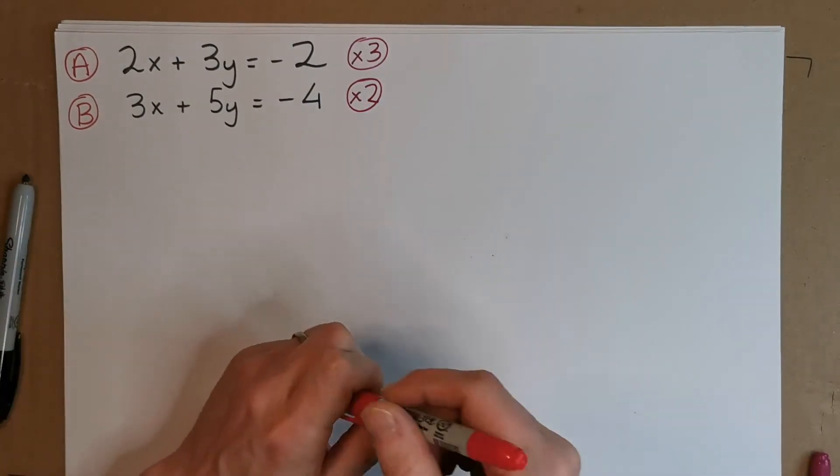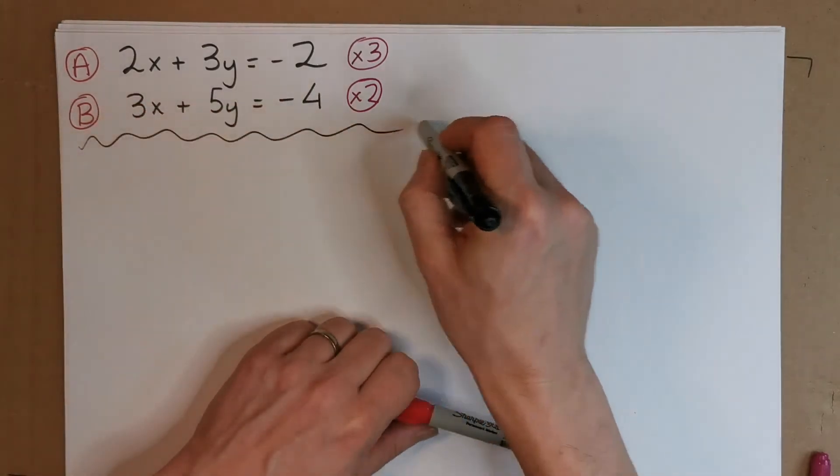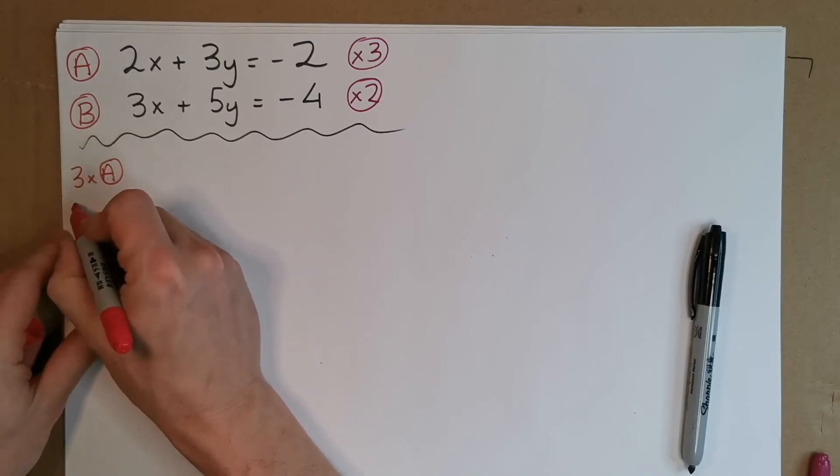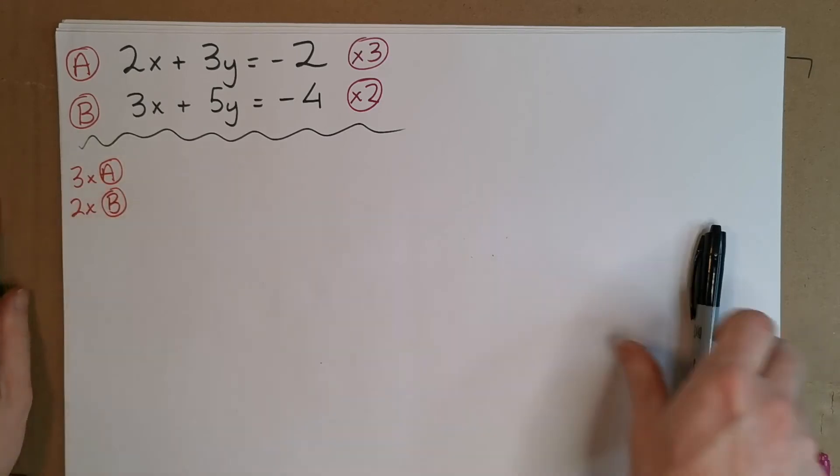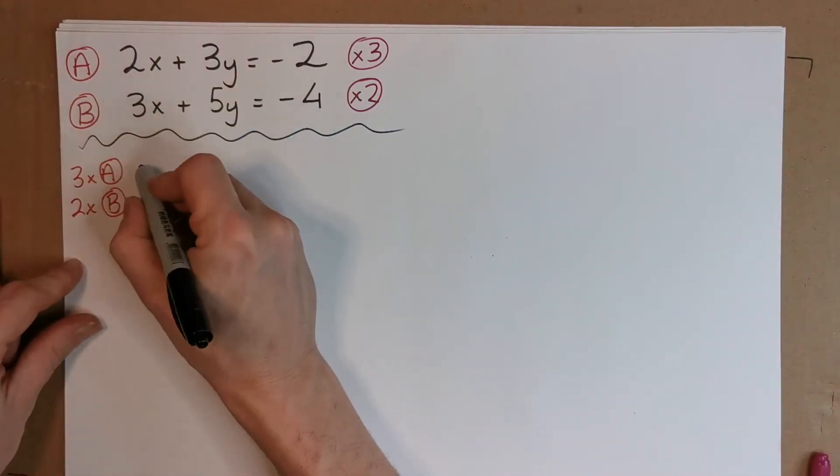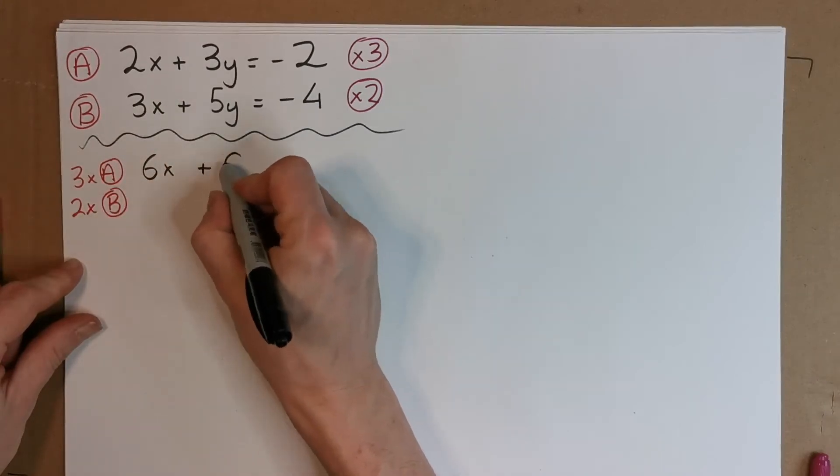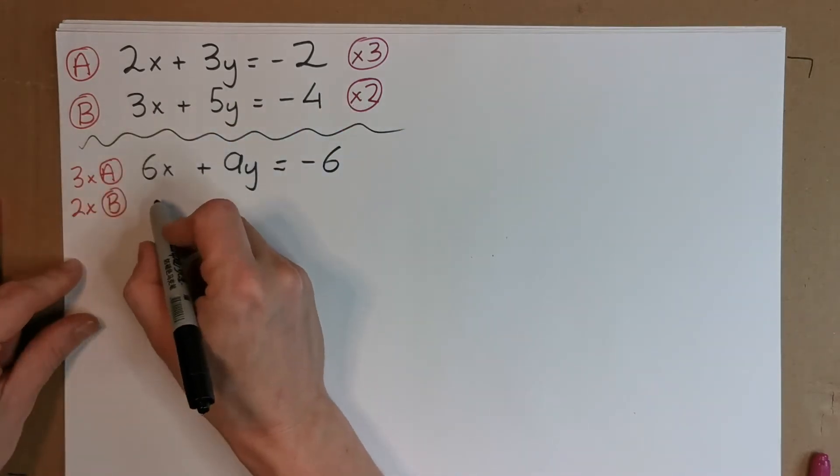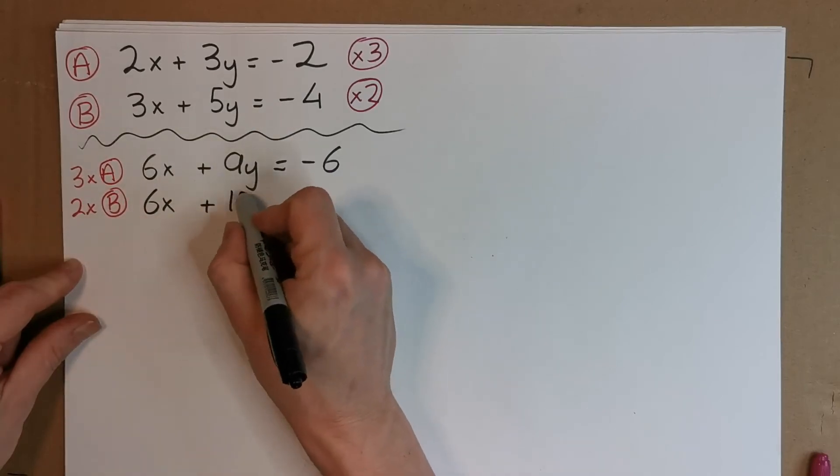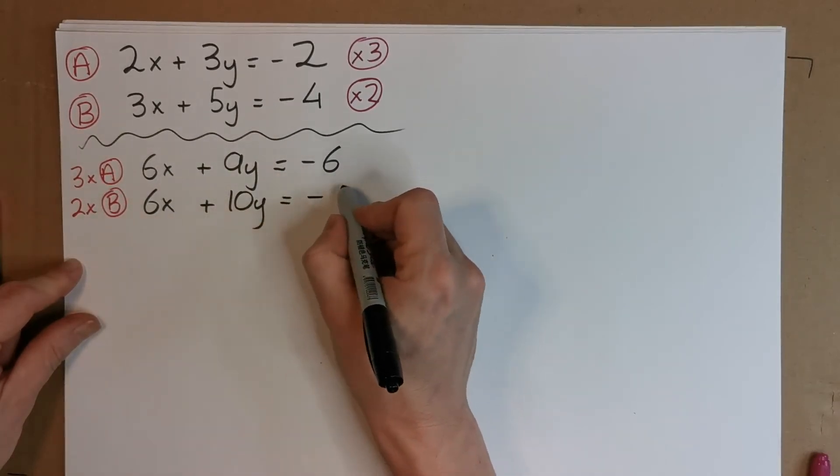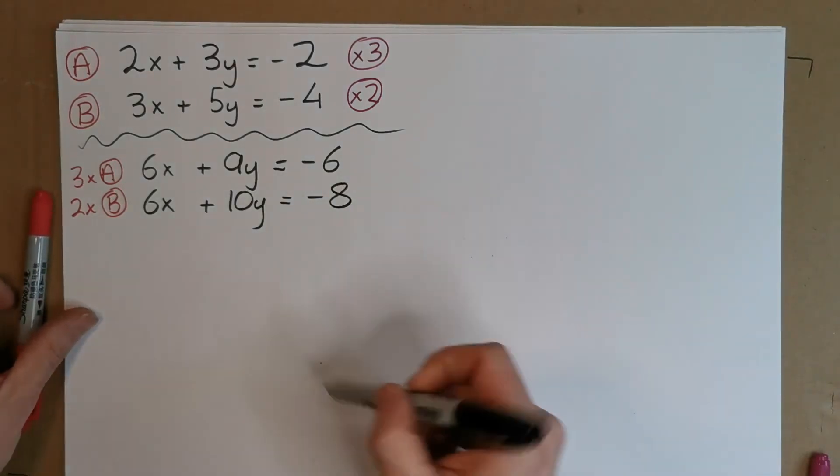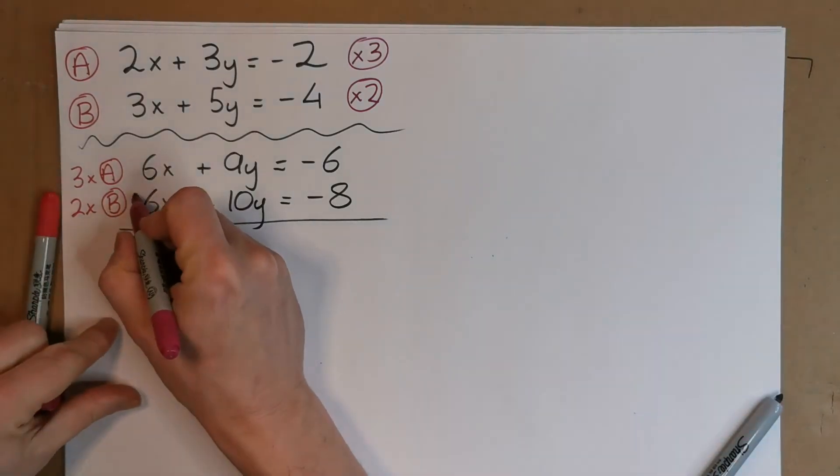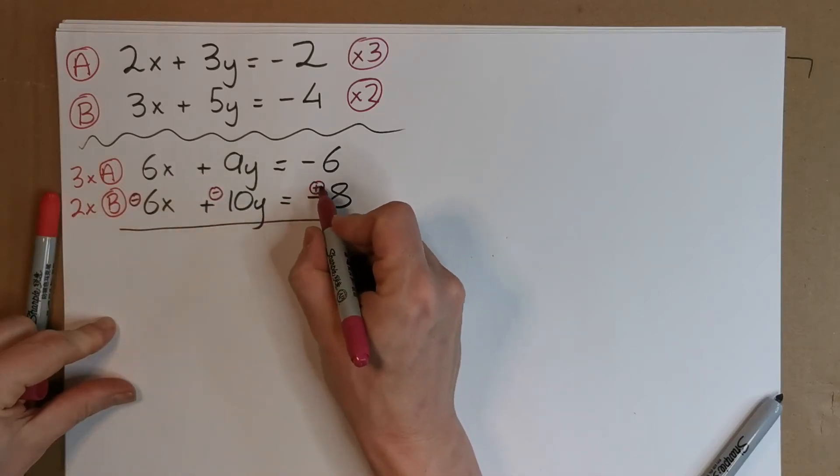When I do that, I essentially have my next line - it's going to be 3 times A and 2 times B. Remember we talked about labeling these equations. What's 3 times A? That is 6X plus 9Y equals minus 6. And 2 times B, that is 6X plus 10Y equals minus 8. Now, we can see here that we've matched up these coefficients. So, our next step then was to change the signs. This now changes to a minus, this changes to a minus, and this changes to a plus.